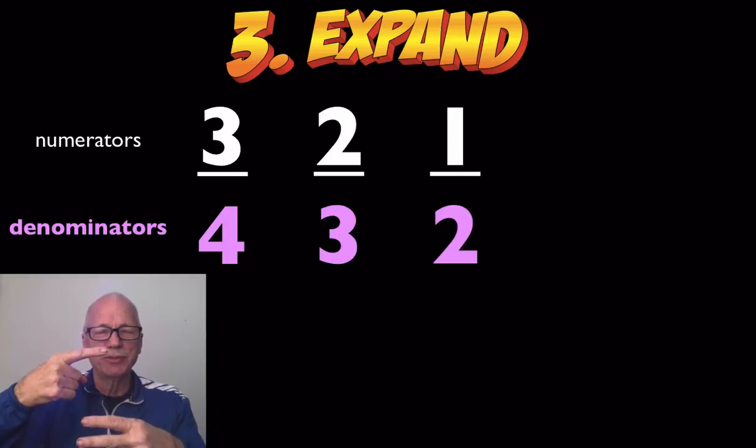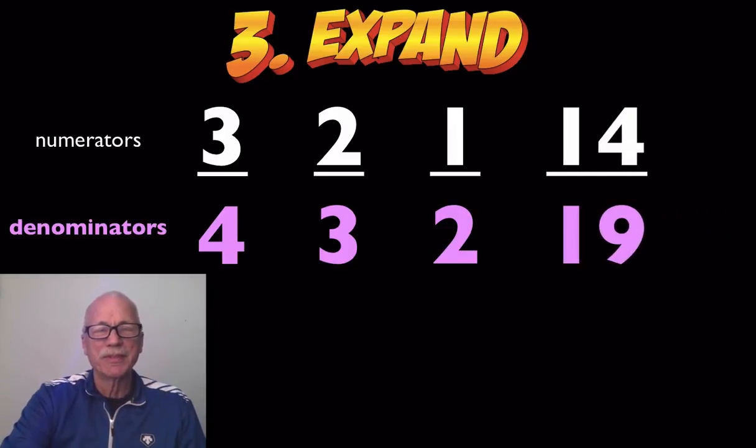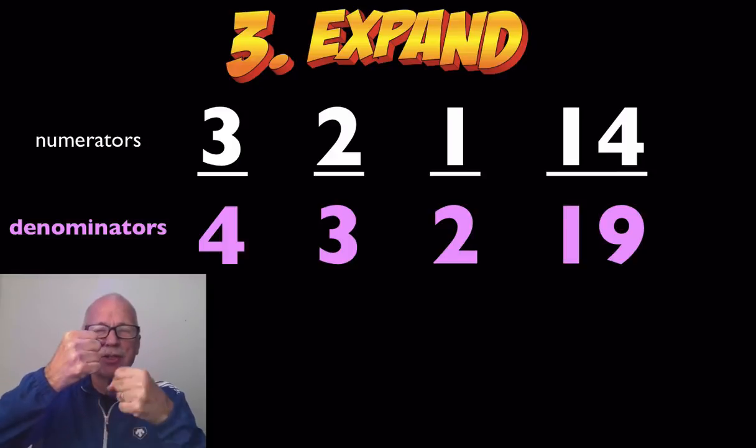One over two. Two is the denominator showing all the parts in the whole. And don't have enough fingers for that one. But again, 19, that's the denominator. It's showing all the parts in the whole.